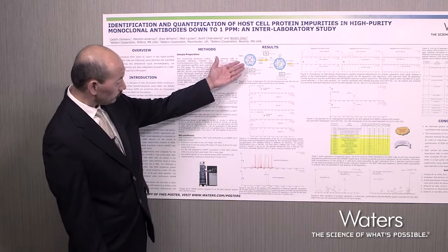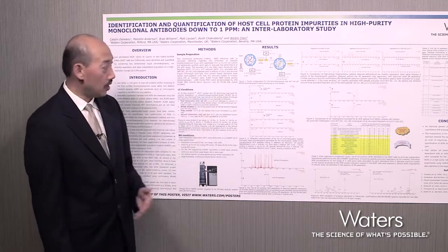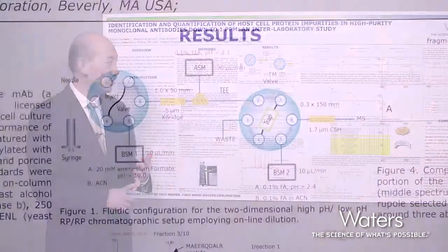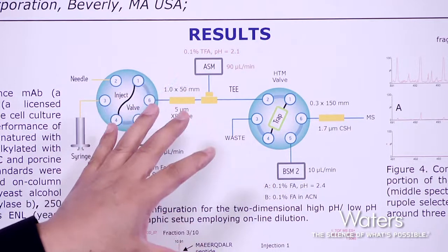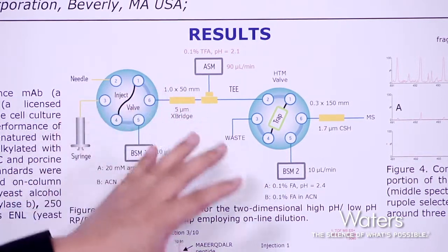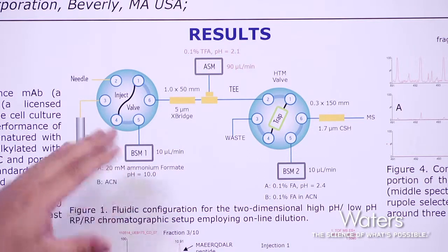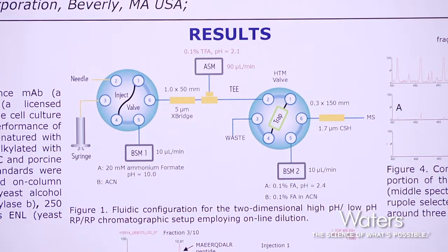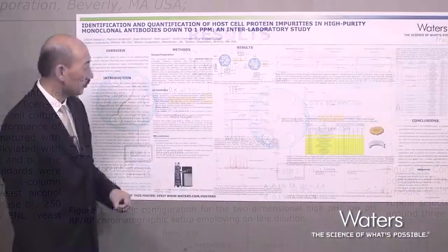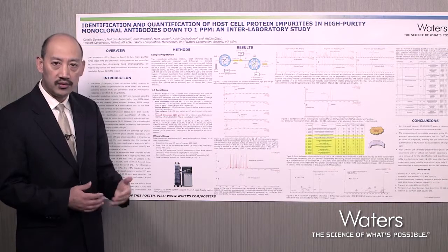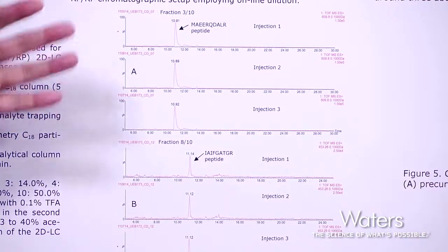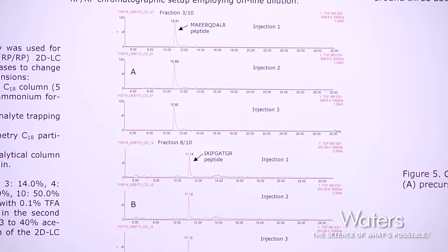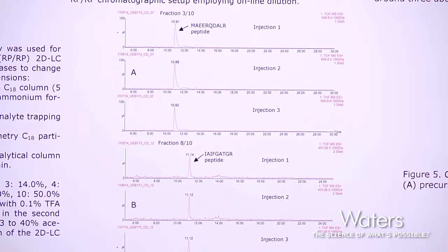The first figure in the poster describes the two-dimensional chromatography schematic — what is used in the first dimension, how the first dimension separation is automatically diluted into the second dimension, and how the sample from the second dimension is resolved in a high-resolution CSH column. The second figure talks about the reproducibility of performance for this particular chromatography setup, showing two examples to demonstrate the reproducibility of the M-Class.